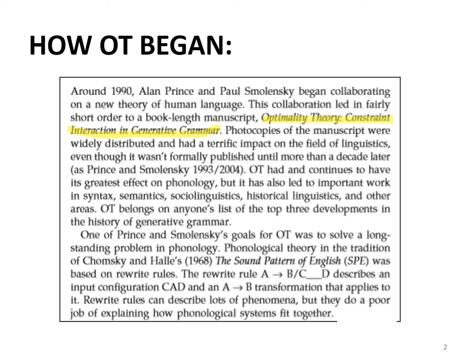The next component is the subtitle. After the colon, the subtitle of the manuscript is 'constraint interaction in generative grammar.' What generative grammar assumes is that there is an underlying form for every linguistic structure, also called input. Within that framework, we talk about the underlying form, which behaves as input, and generative grammar has components capable of generating the output, also called surface forms.